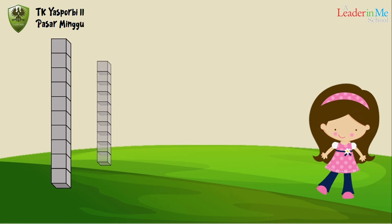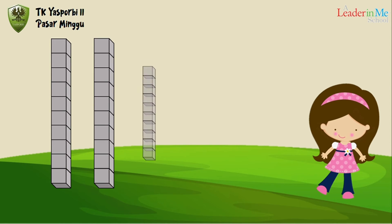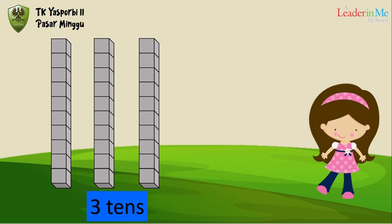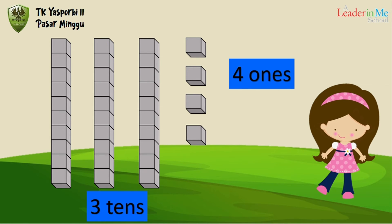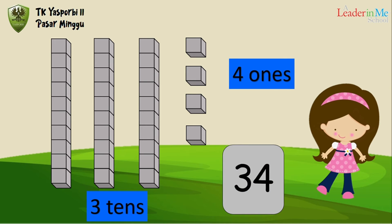Three tens and four ones. One, two, three, four ones. Three tens and four ones equals thirty-four. Okay friends, do you understand?